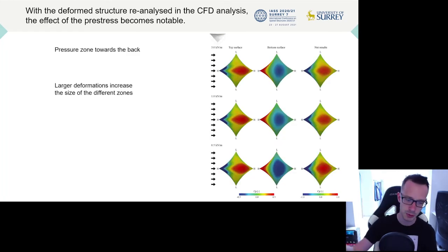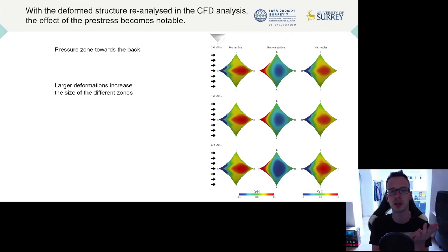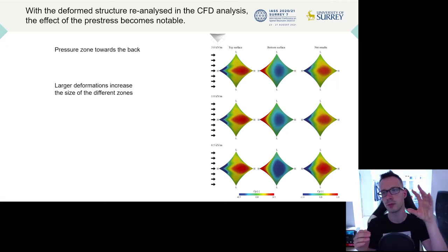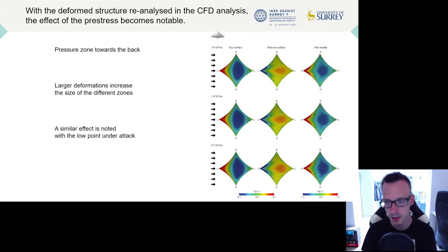However, as we increase the iterations, and as the deformed geometry is put back into the computational fluid dynamics simulation, we start to see some deviations between the three cases, which is certainly where, as the deformations become larger, the effect of these deformations on their eventual pressure distribution has become more notable. But you can see that the difference between the three kN per meter case and the 0.5 kN per meter case is very apparent in the net results here. The same effect can be seen with the low point under attack.